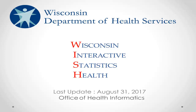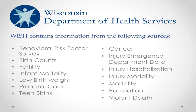Today we will learn how to navigate through the system and use basic functions to create a query. WISH is a user-friendly online query tool that gives the end user the ability to create a table containing data specific to his or her needs. WISH contains information from the Behavioral Risk Factor Survey, Birth, Cancer, Hospital Discharge, Emergency Department, Population, and the Violent Death Reporting System. In total, there are 14 topics or modules available for an end user to query.